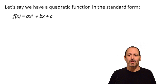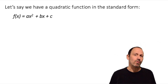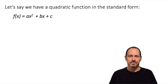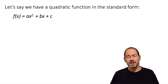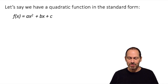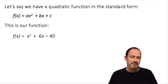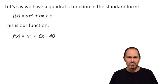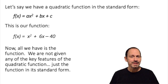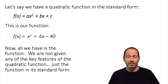Let's say that we have a quadratic function in standard form and that's all we have. We are given the function f(x) = ax² + bx + c — the function is in this standard form. Let's look at a particular function: f(x) = x² + 6x − 40. All we have is the quadratic function, not any of the key features, just the function in standard form.